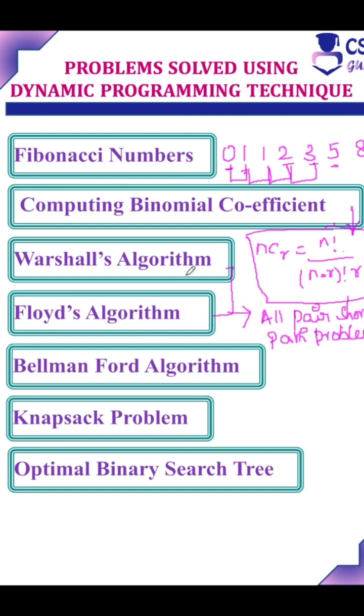Warshall's algorithm will check whether there is an existence of a path between every pair of vertices in the given graph. Floyd's algorithm is used to find the shortest path for every pair of vertices.